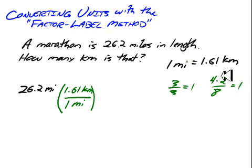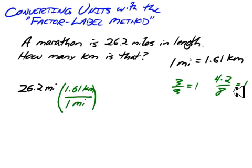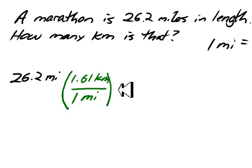Because the thing on the top, the numerator, and the thing on the bottom, the denominator, are equal to each other. Well in our conversion factor, the thing on the bottom, one mile, is equal to 1.61 kilometers.